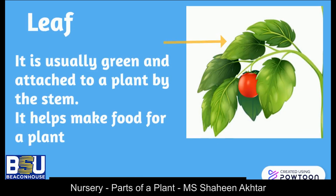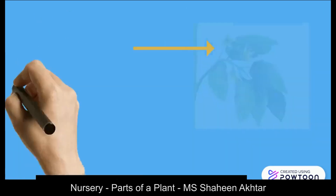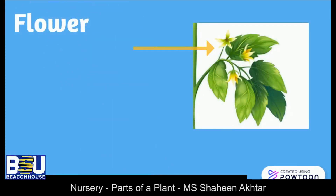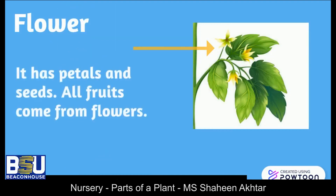Flower — there are such beautiful flowers around us and they are found in many colors. A flower has petals and seeds, and all fruit comes from flowers.